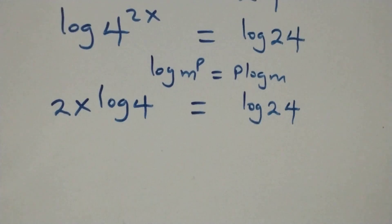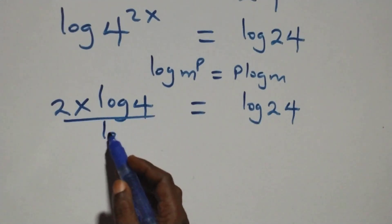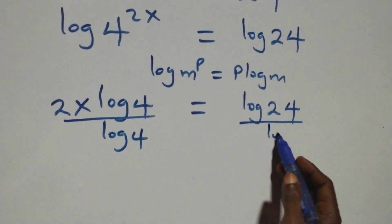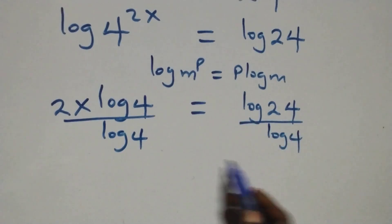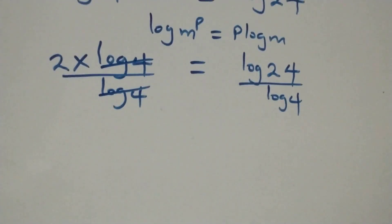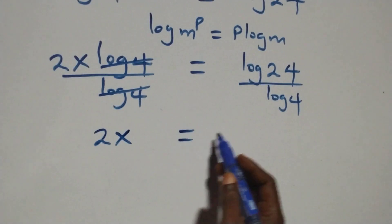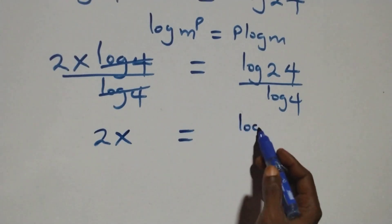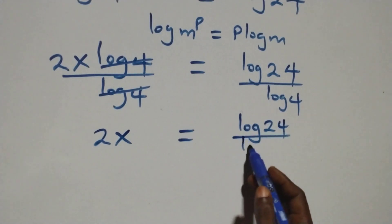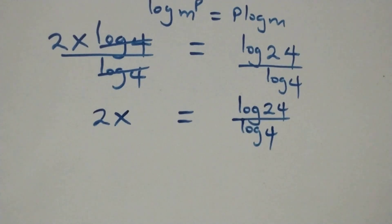The next step: we divide both sides by log 4. The log 4 terms cancel each other, leaving 2x equals log 24 over log 4.